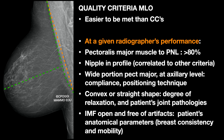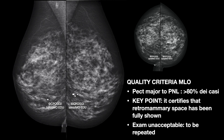Quality criteria for MLO are easier to meet compared to those of the CC view. For a given competence and experience, getting pectoralis major to PNL could be done in more than 80% of cases, as the literature reports. Getting the correct width at the axillary tail depends also on patient compliance. You can see here why showing pectoralis major to and beyond PNL is crucial — it certifies that retro-mammary space has been obtained as much as possible, and the probability of finding lesions in this site is high.